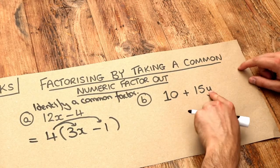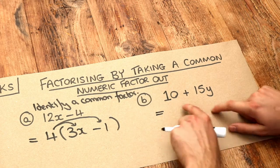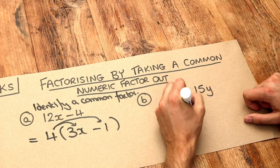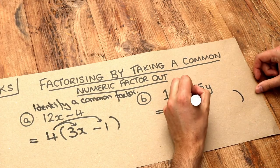What about this second one? What do 10 and 15y have in common? Well, they have a common factor of 5, these two numbers, don't they? So let's put a 5 in front of a bracket and then let's think about expanding but backwards.